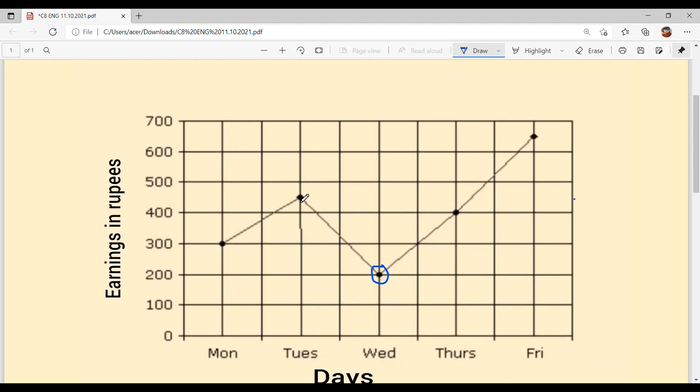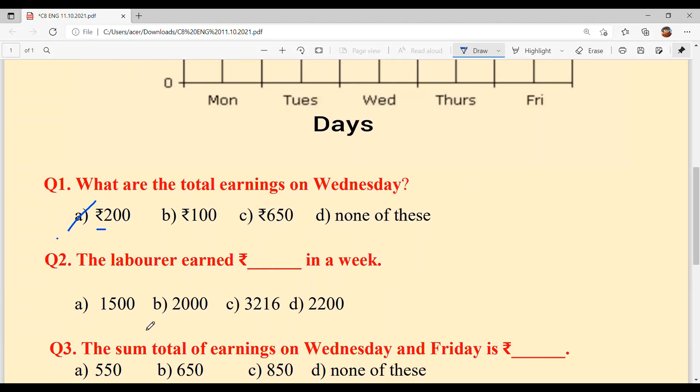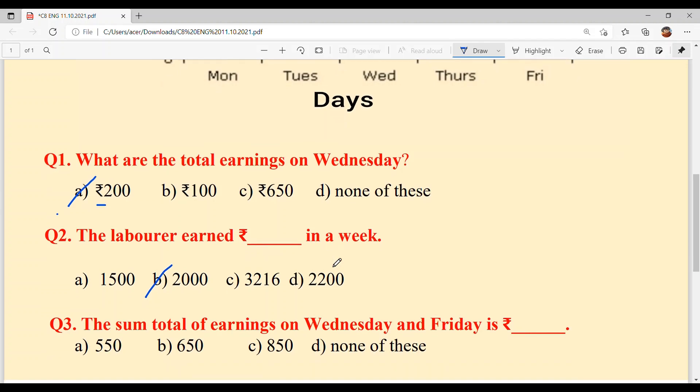300 plus 450 plus 200 plus 400 plus 650 is equal to 2000. Option B is your answer, 2000 rupees.